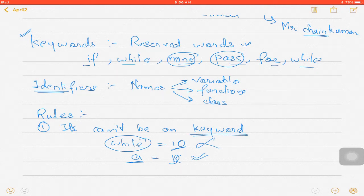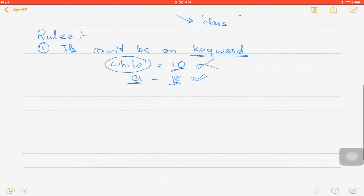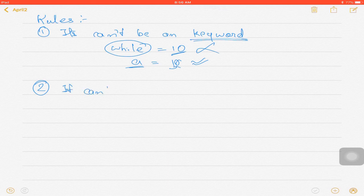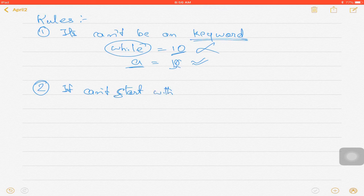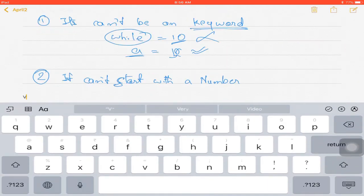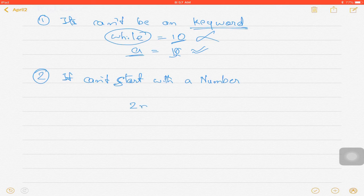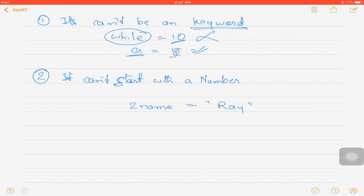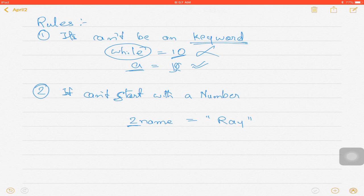The second rule is that it can't start with a number. So if I write '2name is equal to Ray,' this is not doable, though we'll talk about strings and everything later on. This is not doable as it starts with a number. Identifiers should always start with an alphabet. The first alphabet can be capital or small, doesn't matter, and numbers are allowed later on.